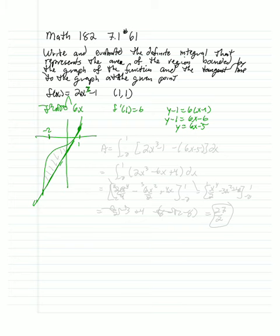So we can see our upper curve is this 2x cubed minus 1 and the lower one is the 6x minus 5.